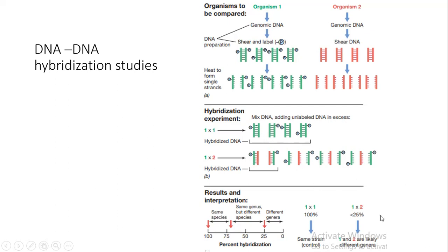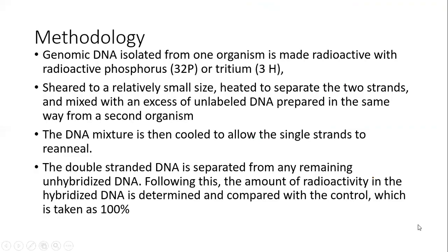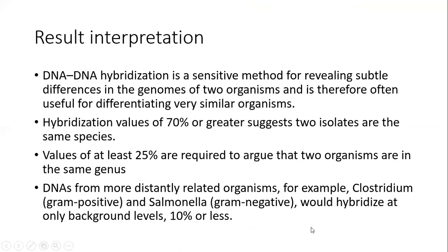In our results, if the hybridization ratio is less than 25%, the two organisms are likely from different genera. The methodology we just discussed and the result interpretation are written on the next slide for your reference.